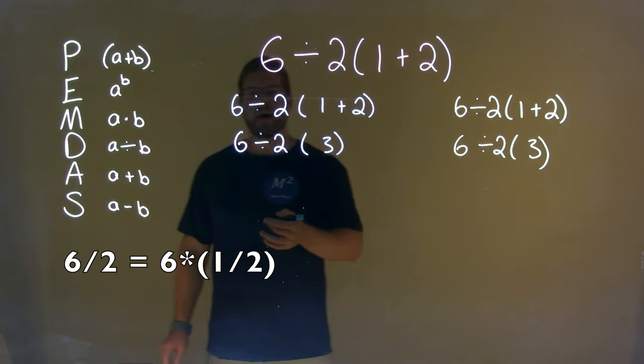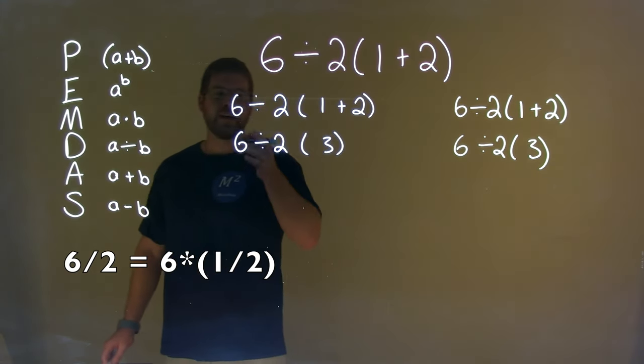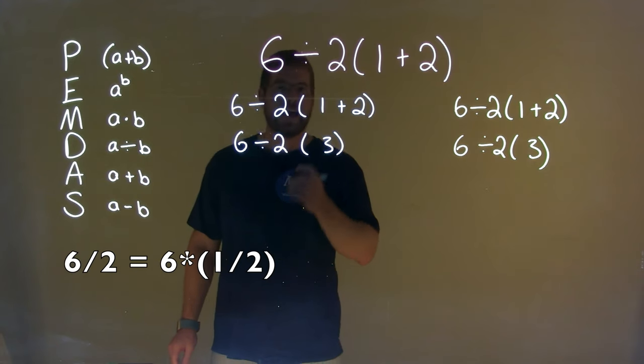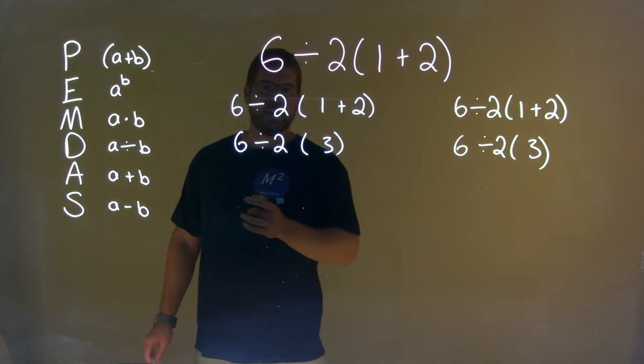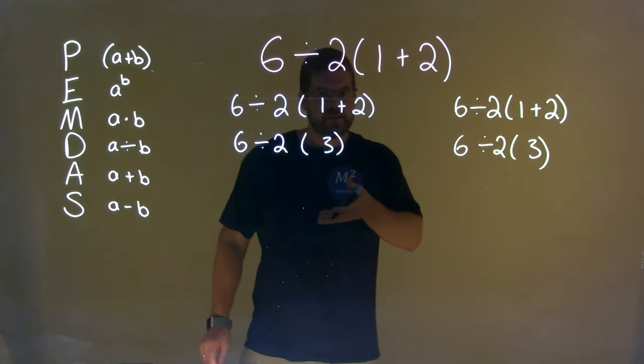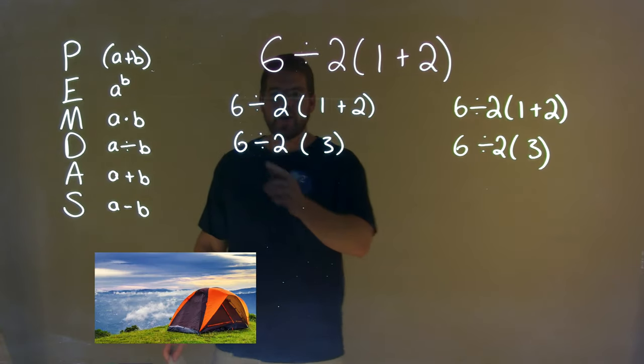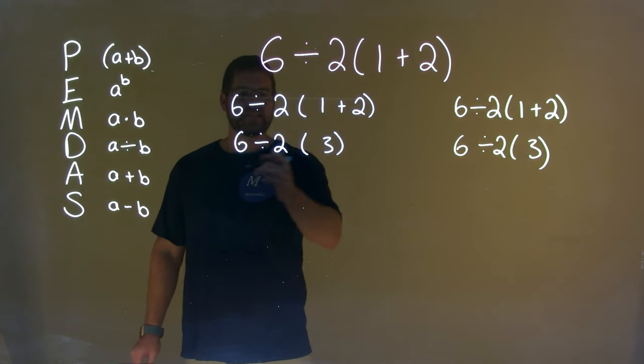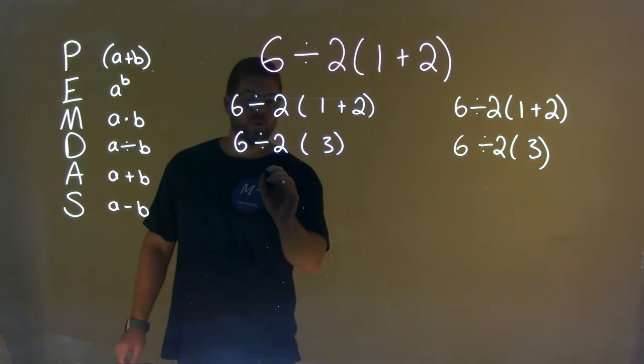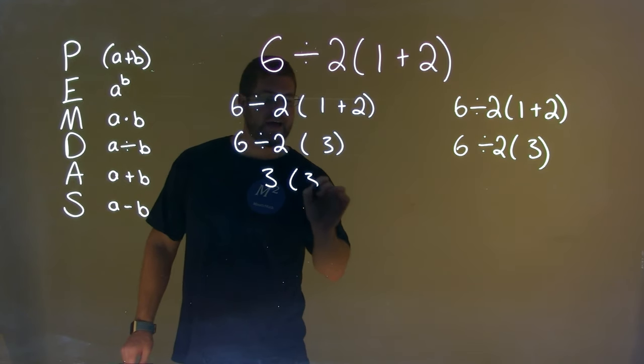Six divided by two is the same thing as six times one half. And if you believe that, if you're in that camp, this operation comes first. Six divided by two is your three. And then we have that there.